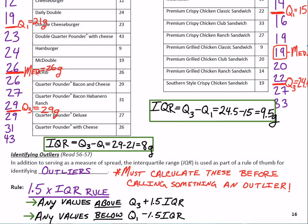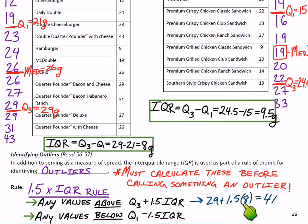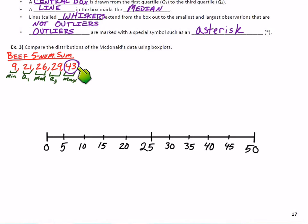With Q3 being 29 grams and IQR of 8, let's check the upper fence: Q3 plus 1.5 times IQR is 29 + 12 = 41. So our upper fence is 41, and 43 would definitely be an outlier — it gets an asterisk. That means our whisker should stop at 31, the biggest observation that isn't an outlier. Thankfully there weren't any low outliers in the beef data.